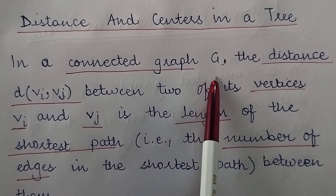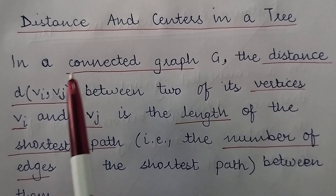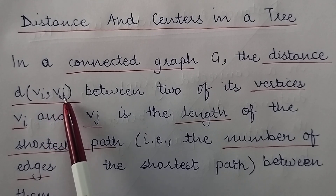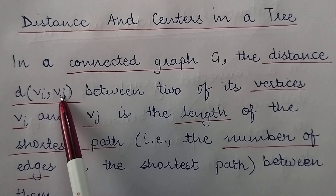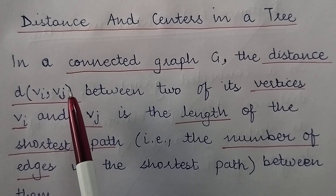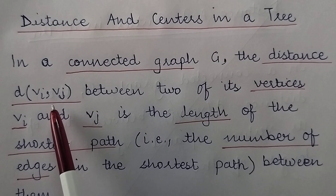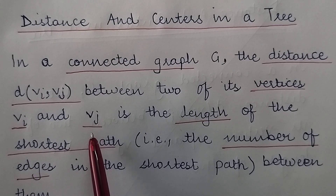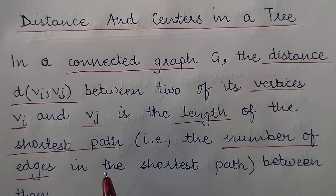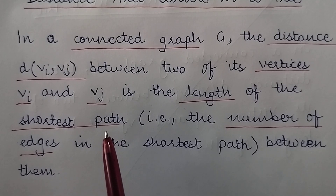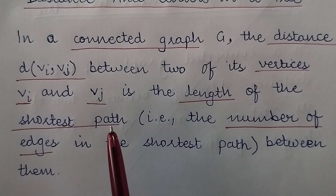In a connected graph denoted by G, the distance d(vi, vj), where vi and vj represent any two random vertices, represents the distance between those two vertices. So in a connected graph G, the distance d(vi, vj) between two of its vertices vi and vj is the length of the shortest path between them. The distance between two vertices is found by finding the shortest path between those two vertices.